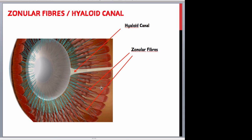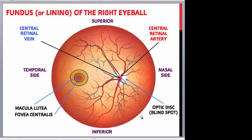The zonular fibres and ciliary muscles change the refractive power of the lens when viewing objects close up or from a distance. Looking at the fundus view of the right eyeball as seen through an ophthalmoscope, the optic disc is the site where the optic nerve exits the eyeball, bundled together with the central retinal artery (a branch of the ophthalmic artery) and the central retinal vein, seen here in blue. The ophthalmic arteries arise from the internal carotid artery, pass into the orbit through the optic canal, and supply the orbit, muscles, and bulb of the eye, including the sclera, retina, and choroid.